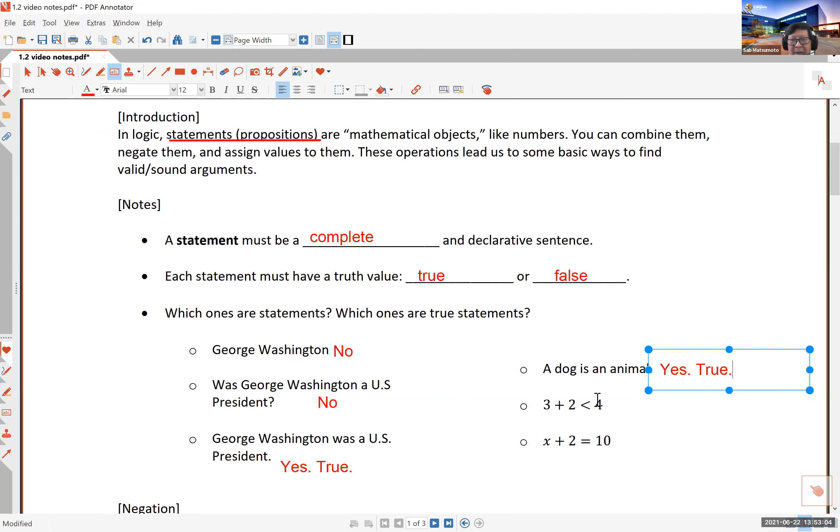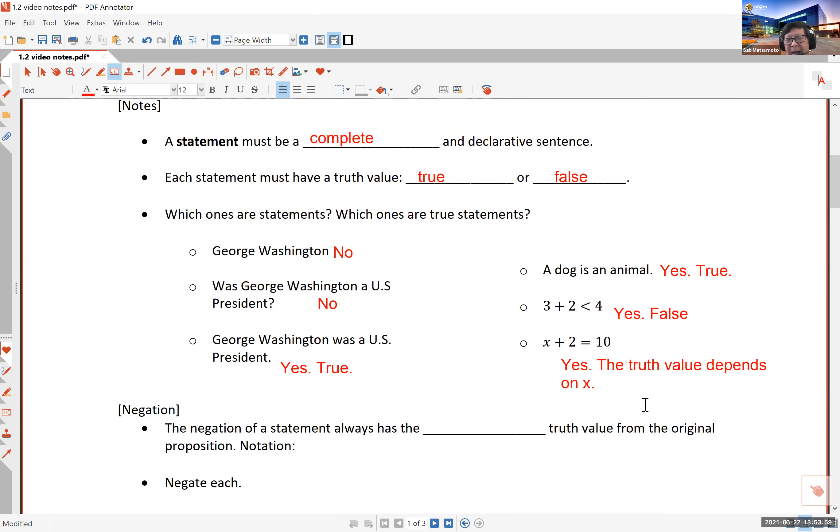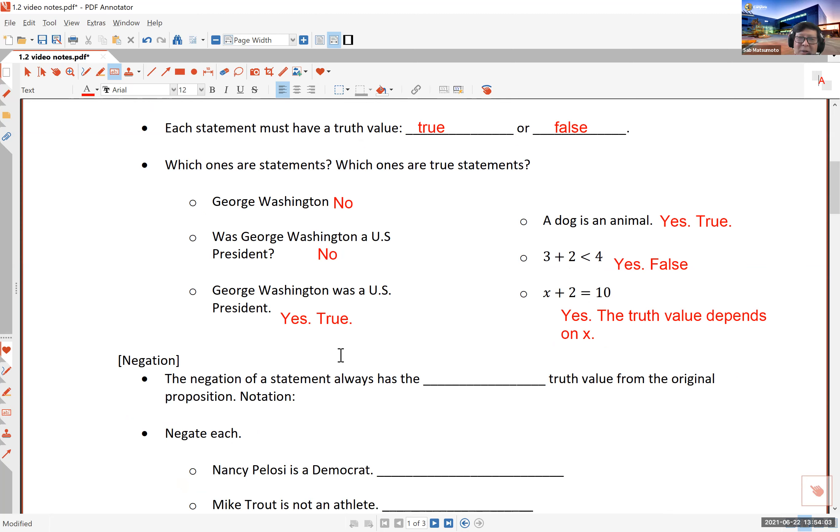The next one says three plus two is less than four. And did you notice that verb is, and then less than four is what we call a predicate. Three plus two is the noun in this case, the sum of three plus two. Now, you say, of course, this is wrong. Five is not less than four, but it is a declarative and complete statement. So this is a statement, a proposition. It turns out to be a false proposition. The last one is a little tricky. It says x plus two is equal to 10. Equal to is a predicate. It is a verb. And so it is a declarative and complete statement. This happens to be a true proposition. Now, the truth value depends on what that x is. If x is eight, this happens to be a true statement. If not, it happens to be a false statement. So that's what a proposition is.